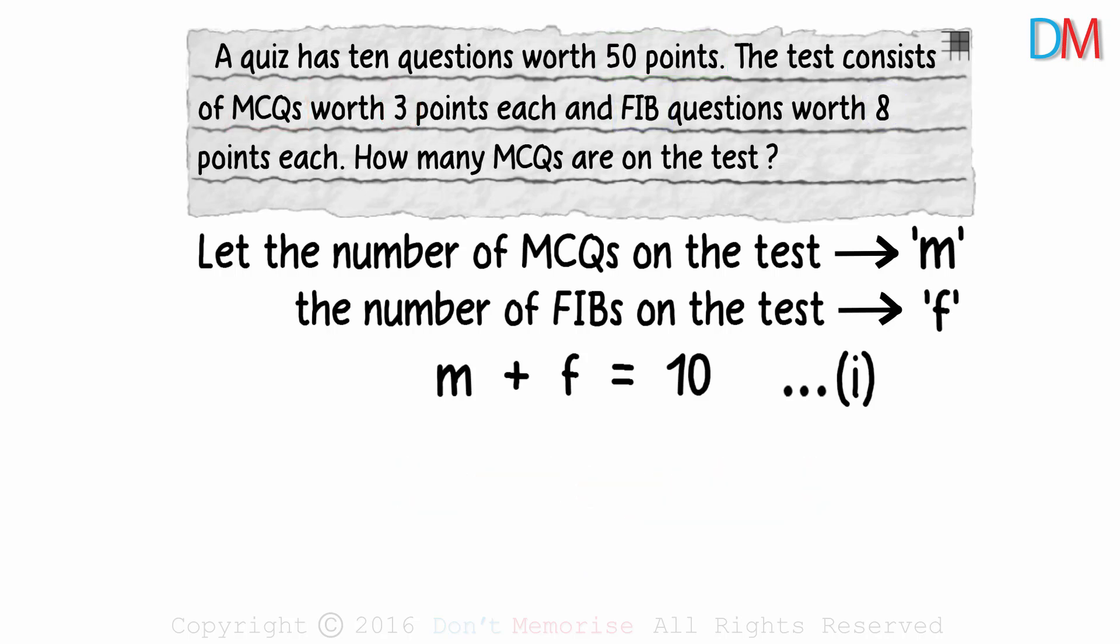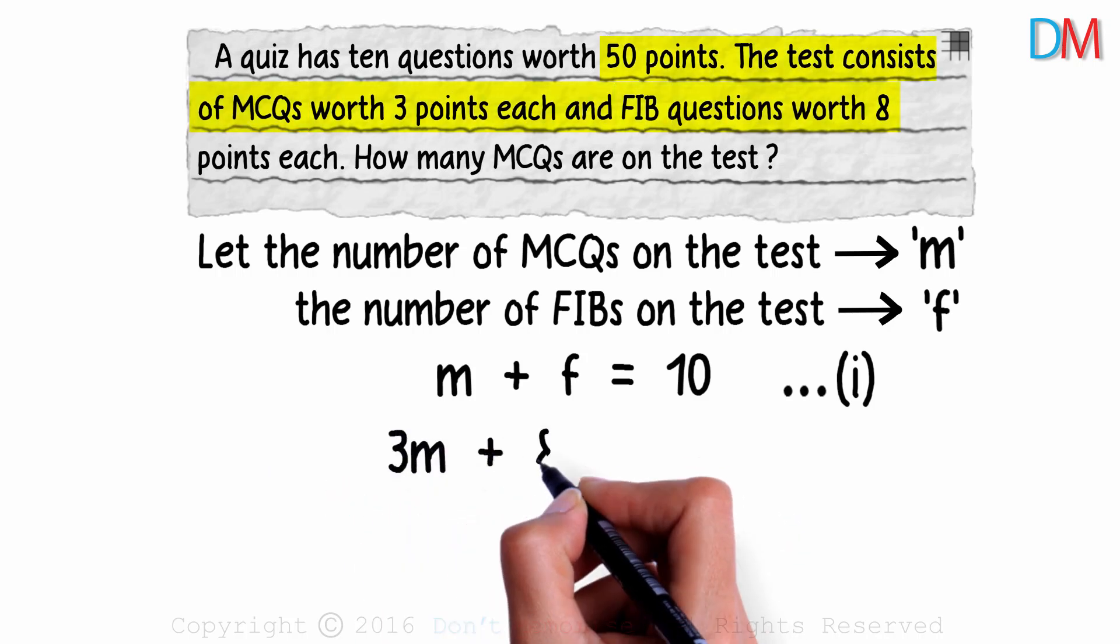The maximum marks you can get with MCQs is 3 times M and the maximum marks you can get with FIBs is 8 times F. So the equation which explains this part is 3M plus 8F equals 50.